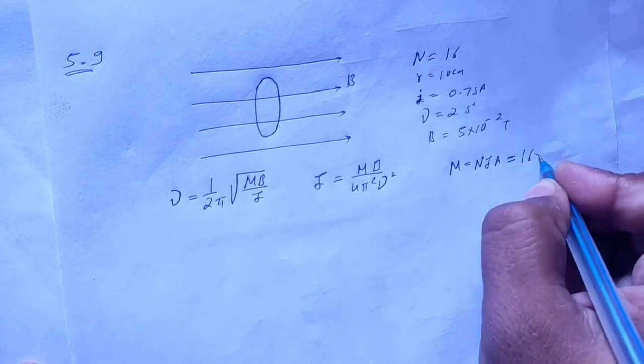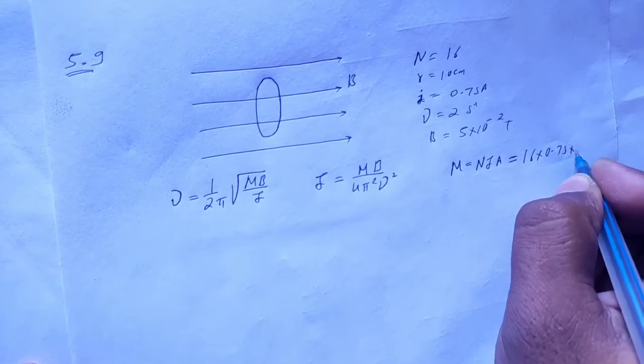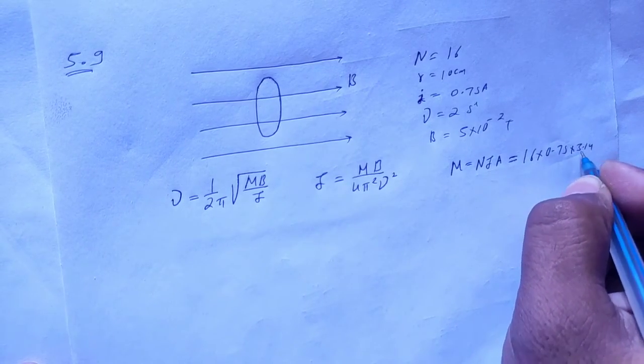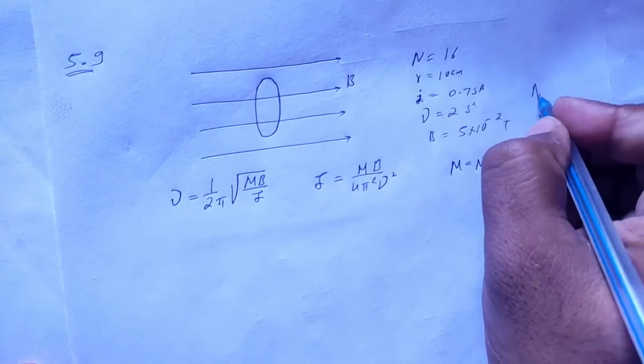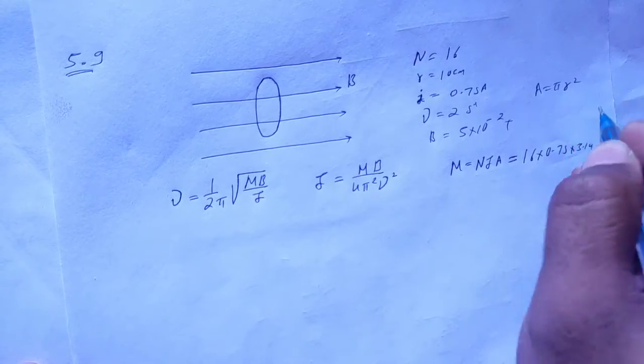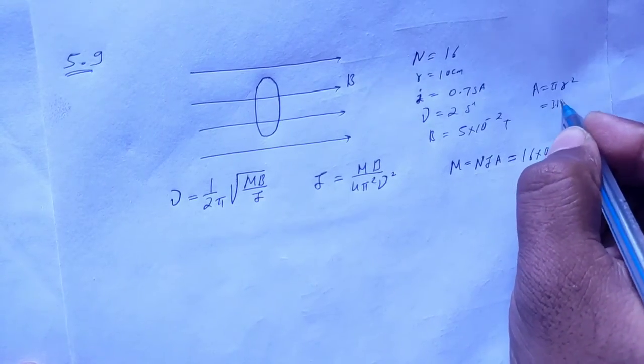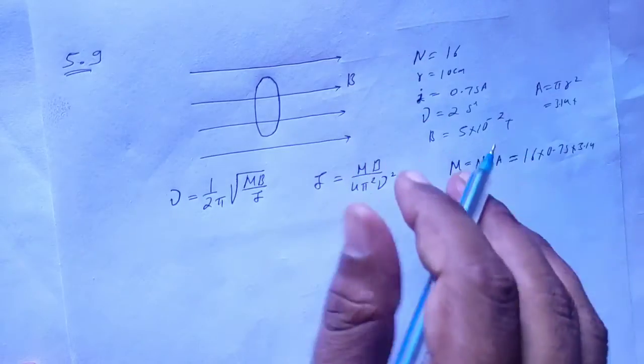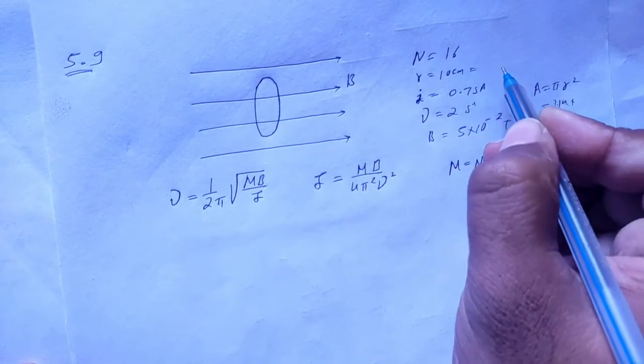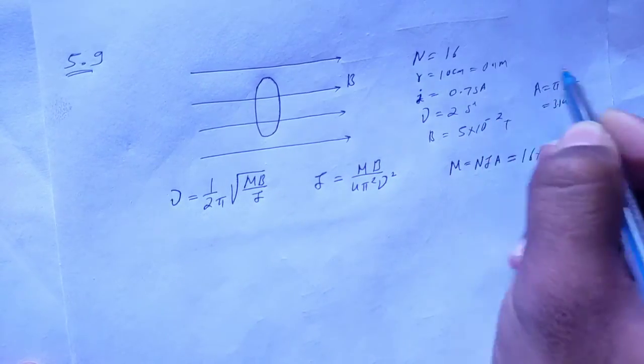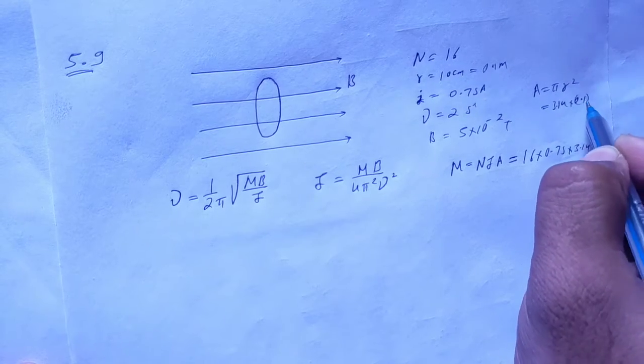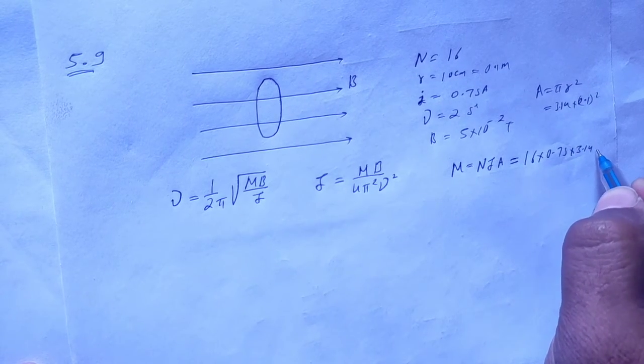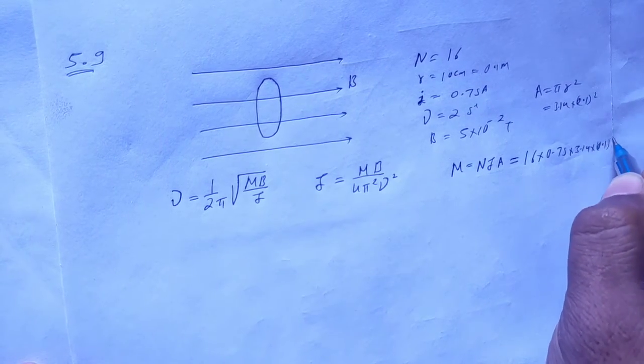So here n i a is 16 into 0.75 into pi r square. Pi is 3.14, and r, the radius here is 10 cm. So 10 cm is 0.1 meter. So this is 0.1 square. Pi r square is 0.1 square.